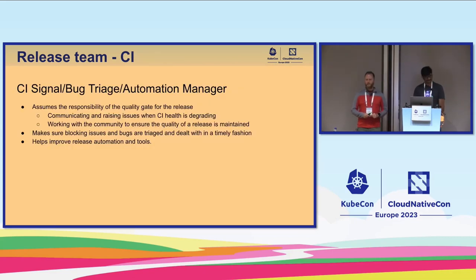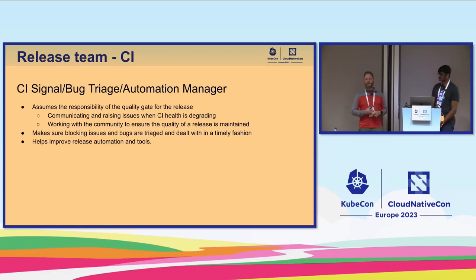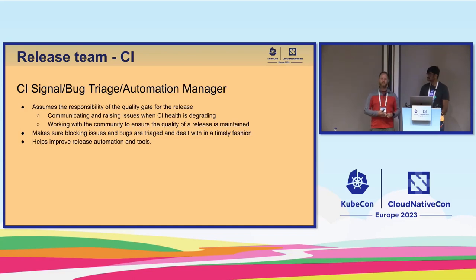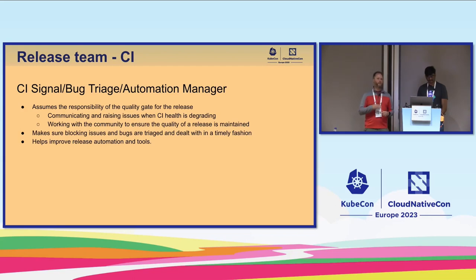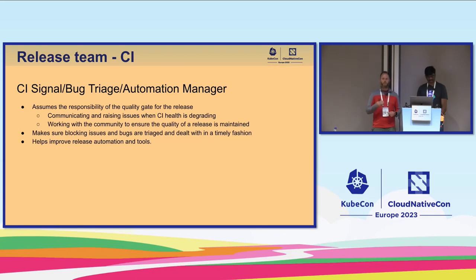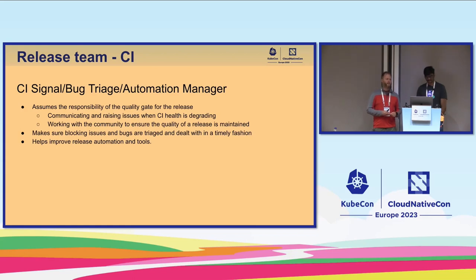The other big team is the CI and bug triage team. They're responsible for gating the release — if a test is failing or something's going wrong, they let the release leads know. They communicate to the wider group when CI is unhealthy or degraded. They may not actually fix the issue, but they're responsible for driving the change, working with maintainers to resolve flaky or failing tests. They are typically the blocker that the release lead checks with before cutting a release.